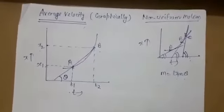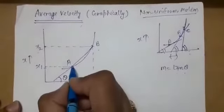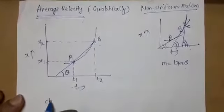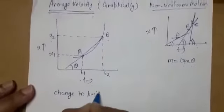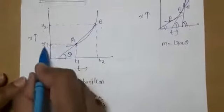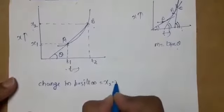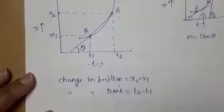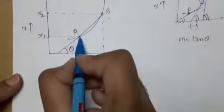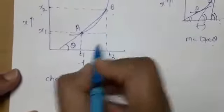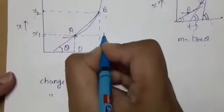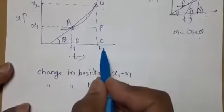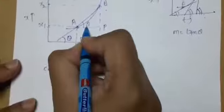In the next step, since initial position is A and final position is B, we have to find the change in position. Change in position equals final position minus initial position: x2 minus x1. Corresponding change in time will be final time minus initial time: t2 minus t1. Let us label the figure with points A, B, C, D, and P. Join AP on line BC, so this angle will also be theta.